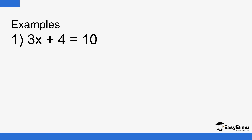This is a very good example of a linear equation and we want to see how you can solve such an equation. You start by collecting the like terms together, so 4 can move to the other side. We have 3x equals 10, but then you take 4 to the other side so it becomes minus.